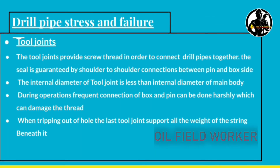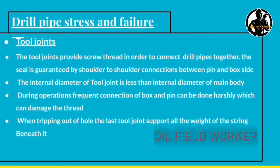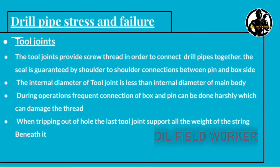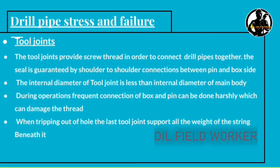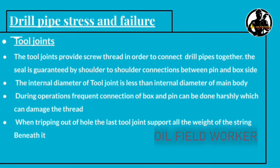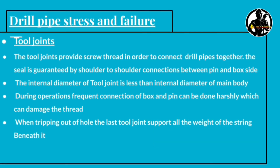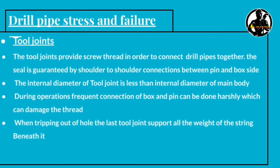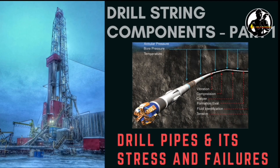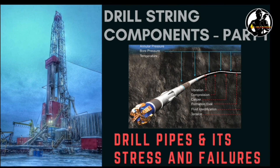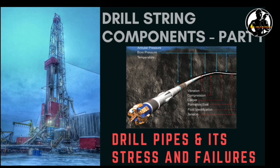Tool joint damage: during operations, frequent connection of the box and pin done harshly can damage the thread. When tripping out of the hole, the last joint supports all the weight of the string beneath it, which can also lead to pipe failure.